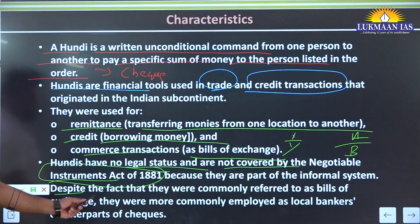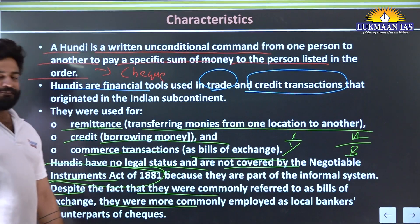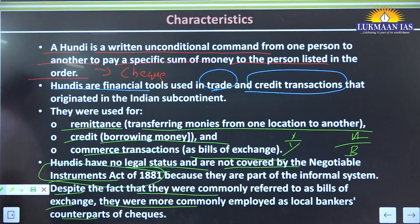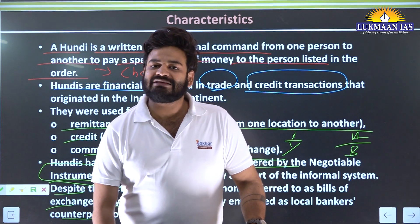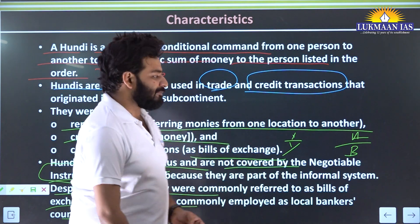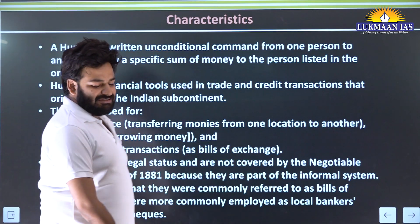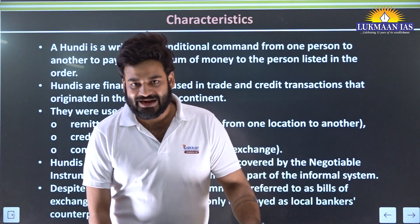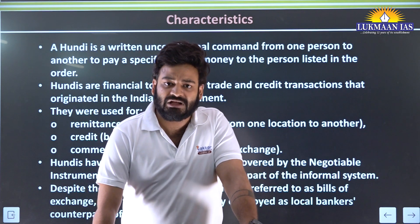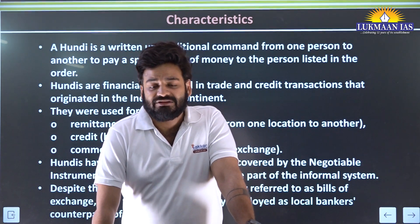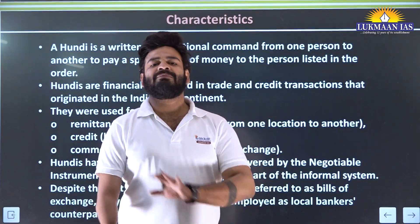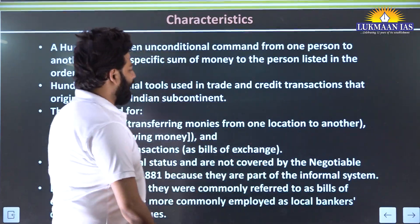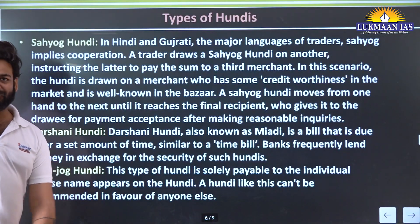Because they are part of the informal system, despite being referred to as bills of exchange, they were more commonly employed as local bankers' counterparts of cheques. In medieval ages, Hundis were used as cheques. Simply put, Hundis were a guarantee for commercial transactions in medieval times, just like cheques and DDs are today.